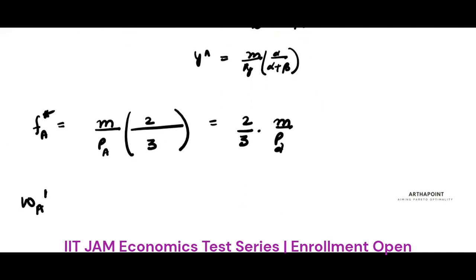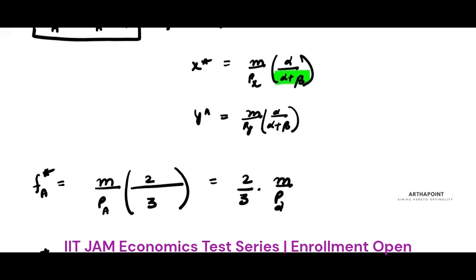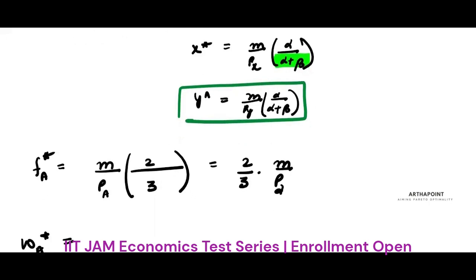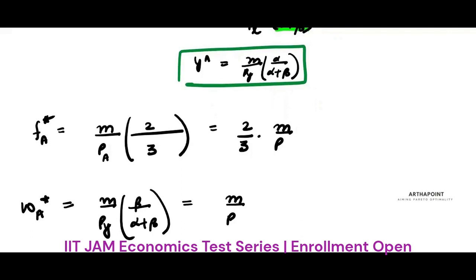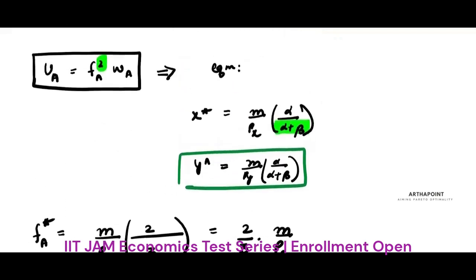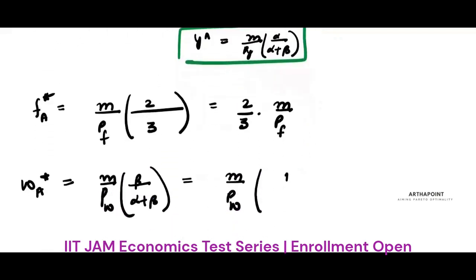Similarly, the amount of water that individual A consumes at equilibrium is (1/3) × M/PW, since beta equals 1 and alpha plus beta equals 3. Let's keep the notation as price of food (PF) and price of water (PW).